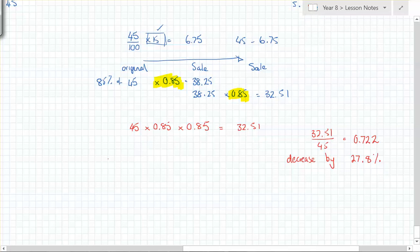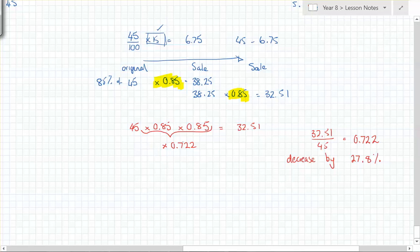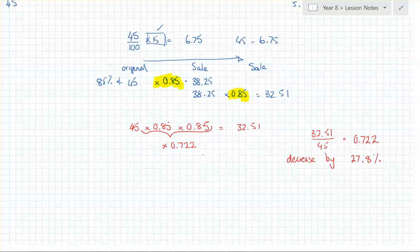Now try this: what is 0.85 times 0.85? It's 0.7225. By thinking in decimal multipliers, you get straight to the overall percentage remaining without extra steps. That's why I say: get used to doing it this way — it helps with much more complicated problems.